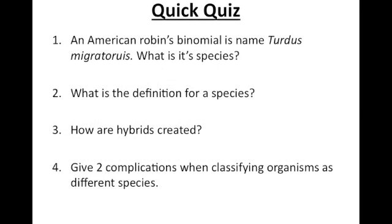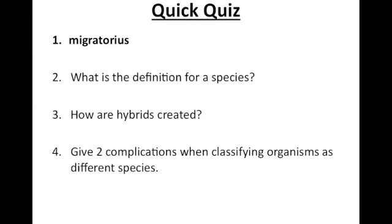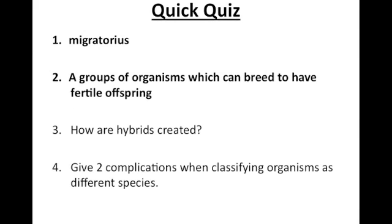Let's go over a quick quiz to test our knowledge. Number 1: an American robin's binomial name is Turdus migratorius — what is its species? Number 2: what is the definition of a species? Number 3: how are hybrids created?